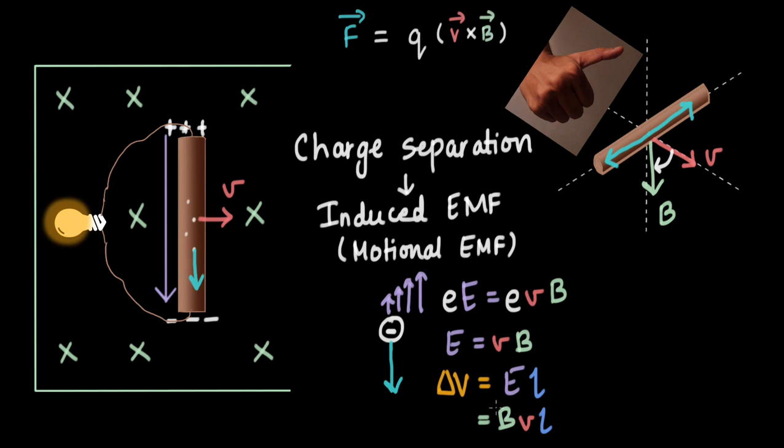The magnitude of the Motional EMF can also be figured out using work done per unit charge, and that is what NCERT does — it calculates the work done by the Lorentz force per unit charge. But that can be slightly misleading, because we know that the Lorentz force, or magnetic force, doesn't do any work.